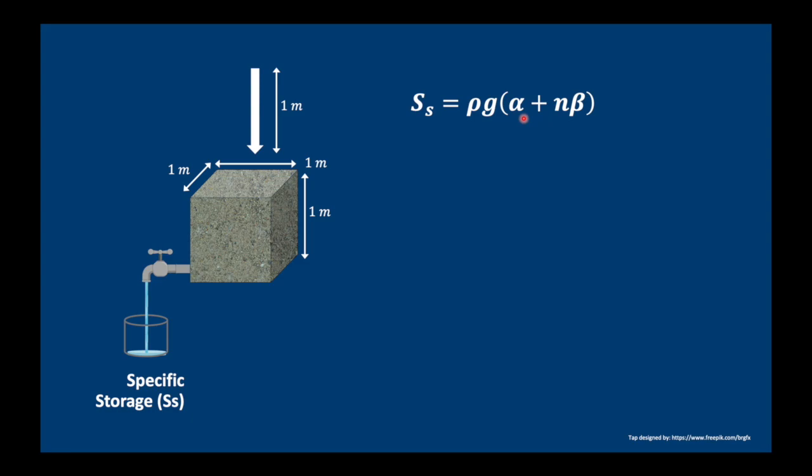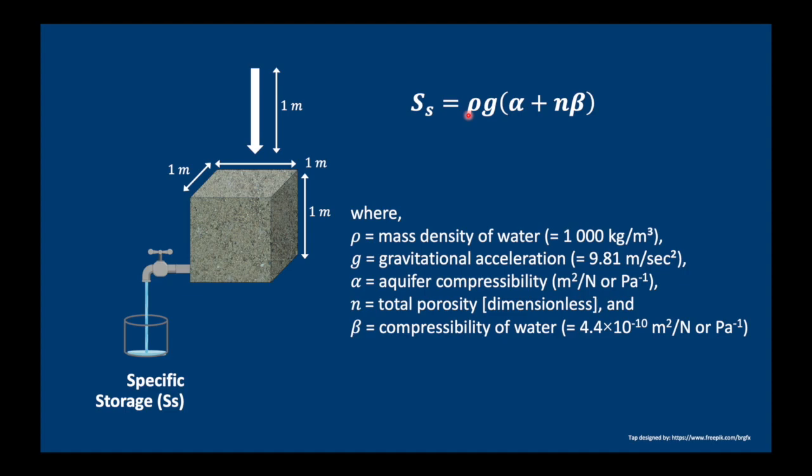So here's our equation for specific storage. You'll recognize the alpha term, which is the aquifer compressibility, and the beta term, which is the compressibility of water. We have the density of water, rho, the gravitational acceleration g, and n is the total porosity. This of course depends on your porosity, how much water you have. Our storativity is the specific storage times the aquifer thickness. So here's our total formula.